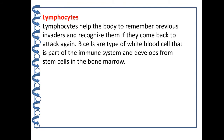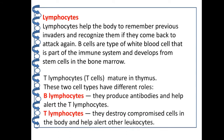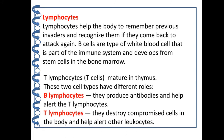Lymphocytes help the body remember previous invaders and recognize them if they come back to attack again. B cells generally develop in the bone marrow and T cells mature in the thymus. B cells produce antibodies and help alert the T lymphocytes, whereas T lymphocytes destroy the compromised cells in the body and help alert other leukocytes.